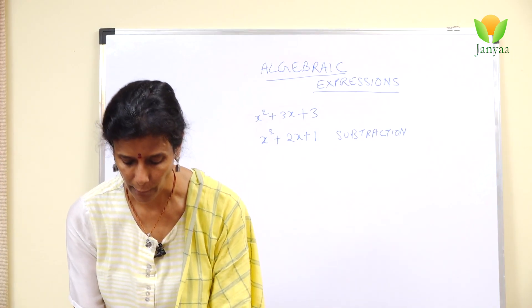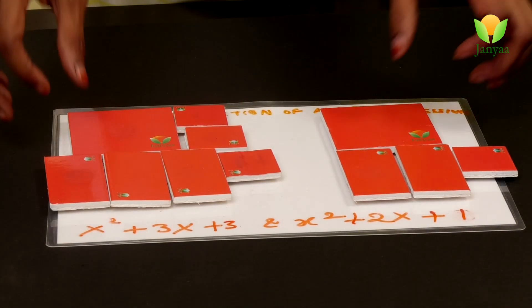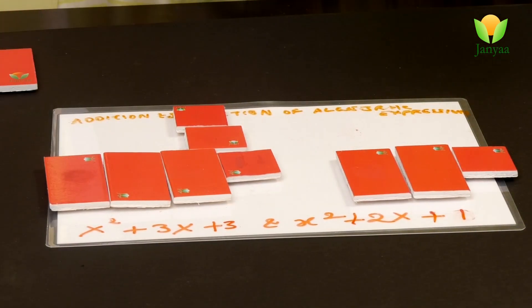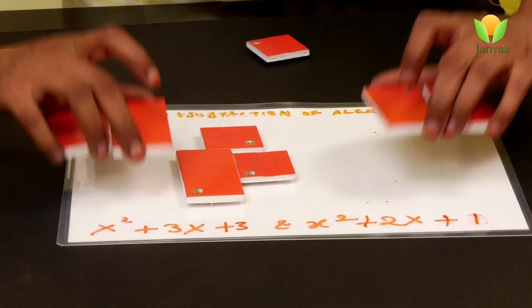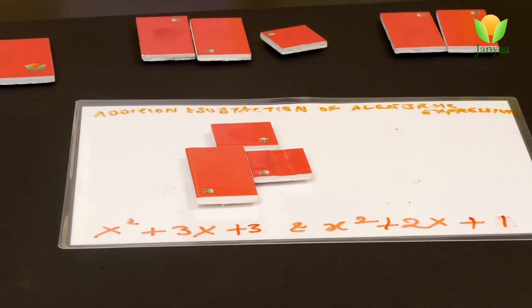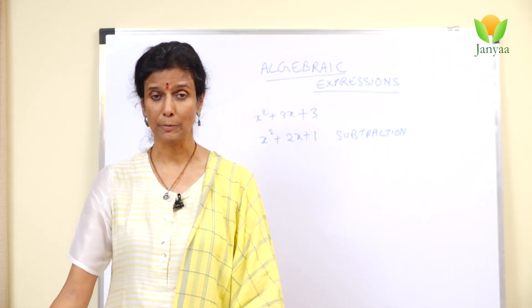Now we want to subtract this equation from this equation, correct? So let's take out similar ones. What is left? X plus 2. That's it, that's how you subtract.